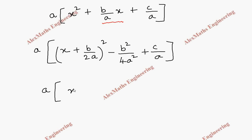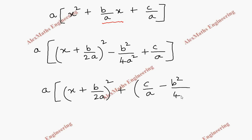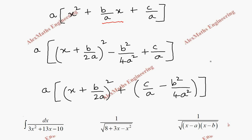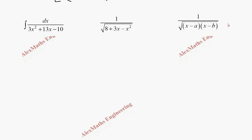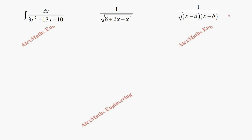Rearranging, we get a times (x + b/2a)² plus c/a minus b²/4a². This is the completing the square form. After that we will apply the six standard formulas which we learned in the previous video. Now coming to these problems — let's take the first one.